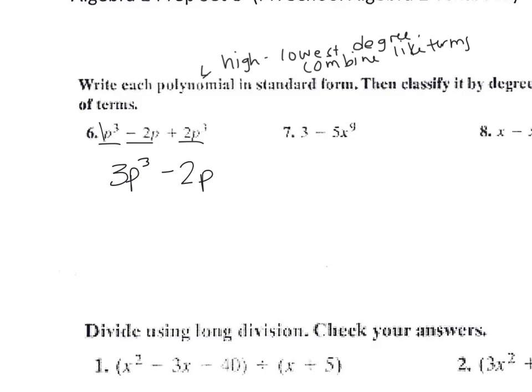So this is a third degree, so when it's third degree it's called a cubic. And there's two terms, so that's called a cubic binomial.